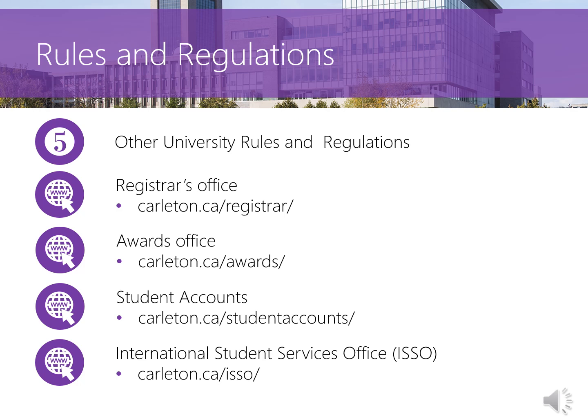There are many other rules and regulations set out by the university — please familiarize yourself with those relevant to you. The Registrar's Office has dates, deadlines, and information regarding registration and examinations. The Awards Office has information pertaining to OSAP and scholarships, including specific credit and CGPA requirements for scholarship renewal. The Student Accounts Office offers dates, deadlines, and information regarding tuition and fee payment. And the International Student Services Office will help with immigration and visa status questions. Please contact the first-year support team if you are unsure where to find the information you are looking for.